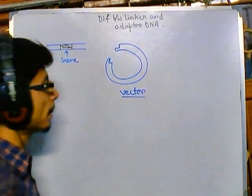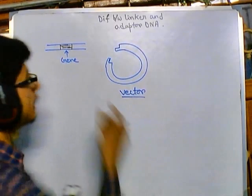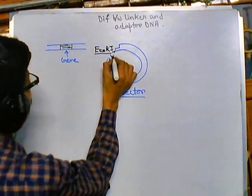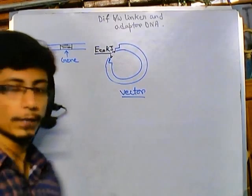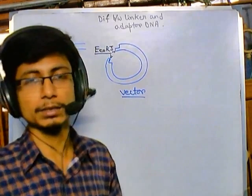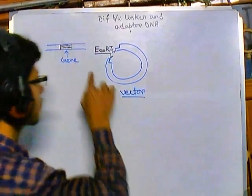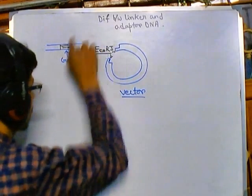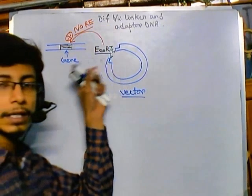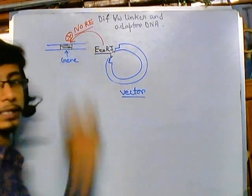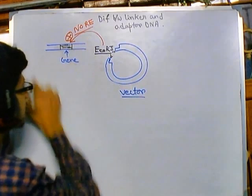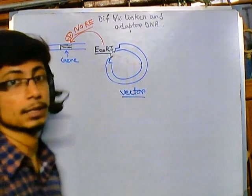We also need to treat the gene with the same restriction enzyme. But suppose in this case the gene does not have the same restriction site. For example, say we treat the vector with EcoR1 and get cohesive ends. The rule is to treat both the vector DNA and the gene of interest with the same restriction enzyme to get compatible ends. But there is no EcoR1 restriction site in the gene — there are other sites, say for BamH1, but no EcoR1 site.